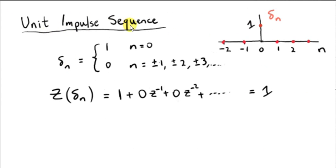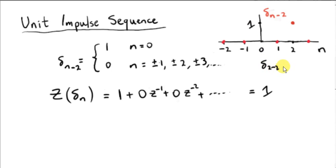Now let's consider a unit impulse sequence where the impulse occurs at n=2. The minus sign here indicates the original sequence has been shifted 2 units to the right. We want this sequence to have the same value at 2 that the original had at 0. Plugging 2 in for n gives delta(2-2) = delta(0), which equals 1. That explains the minus sign and why the sequence is shifted right by 2 units when we replace n with n-2.